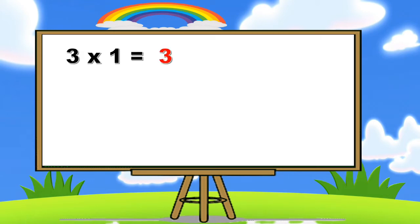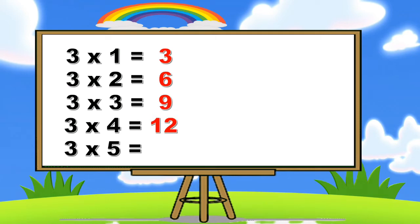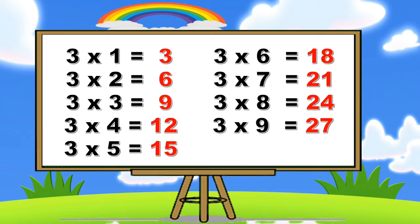Three ones are three. Three twos are six. Three threes are nine. Three fours are twelve. Three fives are fifteen. Three sixes are eighteen. Three sevens are twenty-one. Three eights are twenty-four. Three nines are twenty-seven. Three tens are thirty.